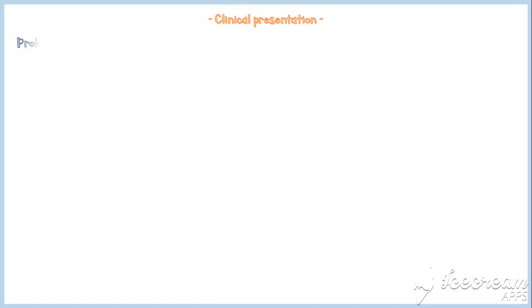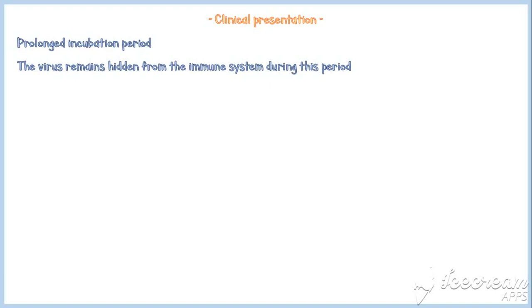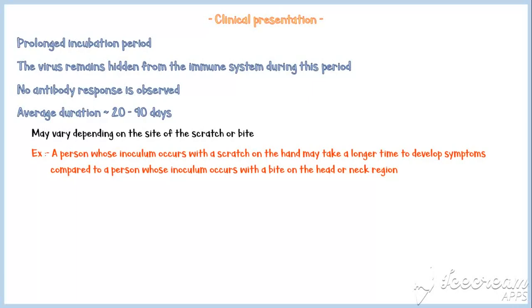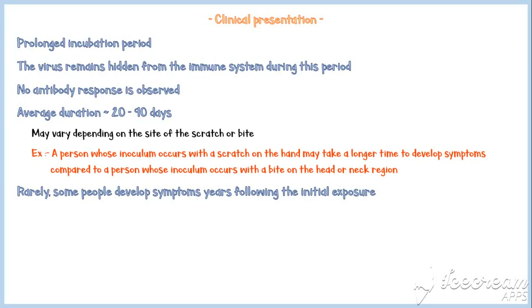Now let's discuss the clinical presentation of rabies. The virus follows a prolonged incubation period and remains hidden from the immune system during this period, with no antibody response observed. Average duration of incubation is 20 to 90 days, and this may vary depending on the site of the scratch or bite. For example, a person whose inoculum occurs with a scratch on the hand may take longer to develop symptoms compared to a person whose inoculum occurs with a bite on the head or neck region. Rarely, some people develop symptoms years following the initial exposure.